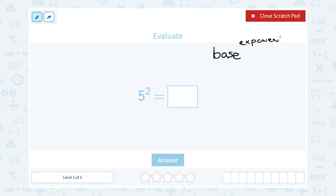To evaluate this, exponents mean to multiply the base by itself the exponent number of times. So when I have five to the second power, that's telling me to multiply five by itself twice, or five times five.